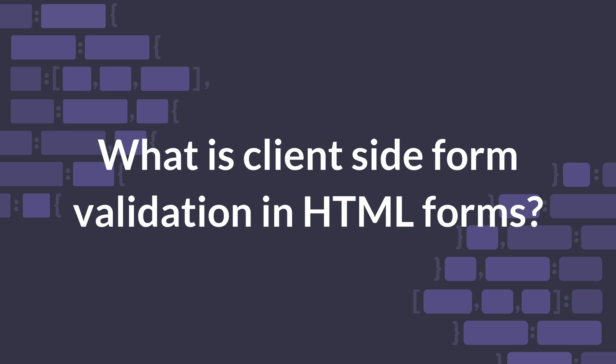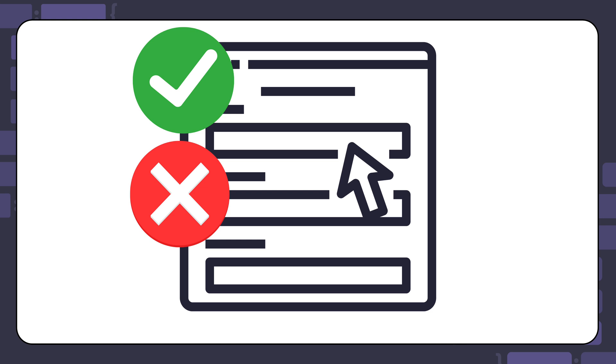What is client-side form validation in HTML forms and what are some examples? When a user fills out a form on your website, it is important that they fill out all the necessary information in the correct format. HTML form controls like inputs have a lot of built-in validation that you can use to check for invalid data. This will help ensure that the user fixes these mistakes before the information is submitted and processed by the server.